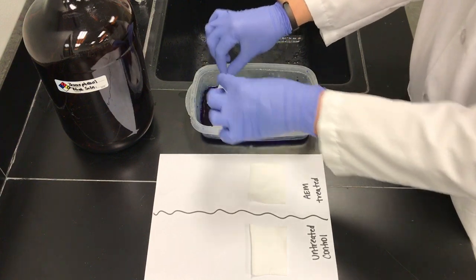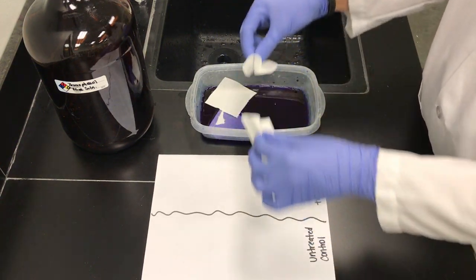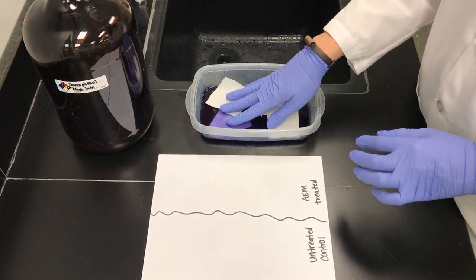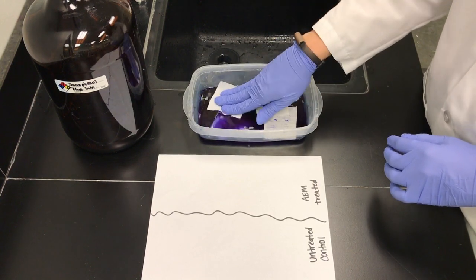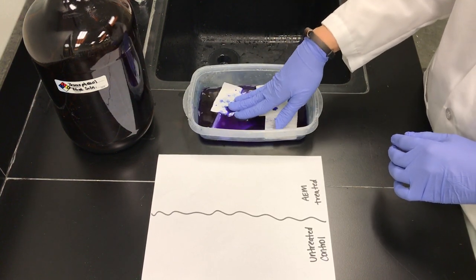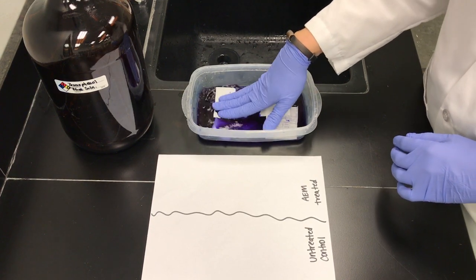Soak the samples directly in the BPB. Some samples will need to soak upwards to 20 minutes, but most will show some staining in less than one minute. One could agitate the sample to help wet the sample out.